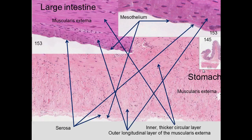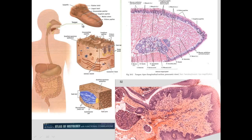Looking at the muscularis externa, the inner layer is circular and the outer layer is longitudinal. You can see that both in the stomach and in the large intestine.